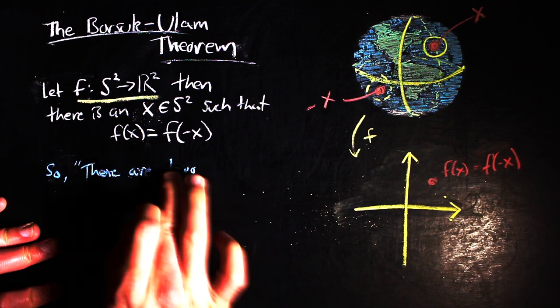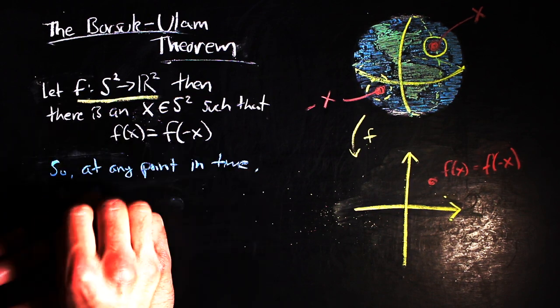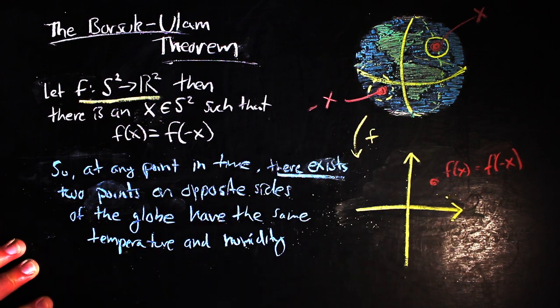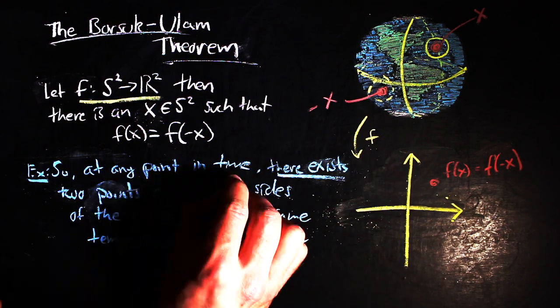So for instance, by this theorem, at any given point in time, there are two points on opposite sides of the globe that are experiencing the exact same temperature and humidity levels.